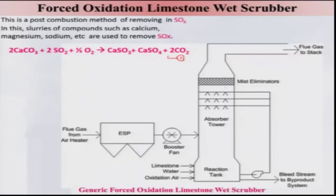Once the sulfur is removed in the form of calcium sulfide and calcium sulfate, the flue gas is cleaned of SOx and then released to the atmosphere. This method is already implemented in power plants. We will stop here and discuss the NOx control method in the next lecture.